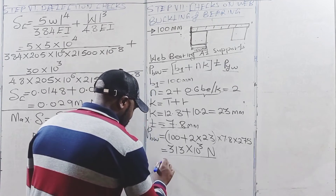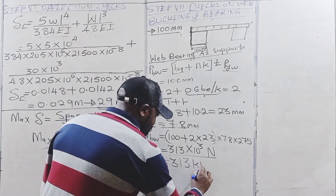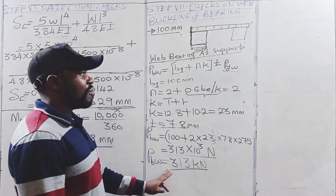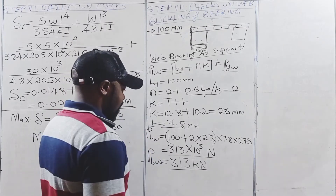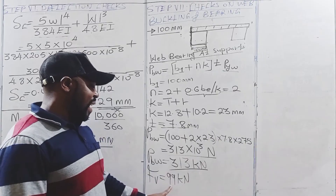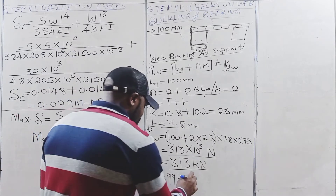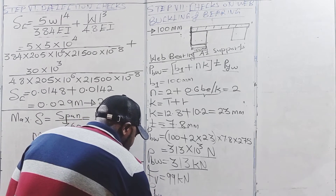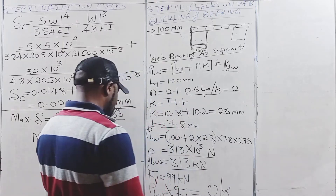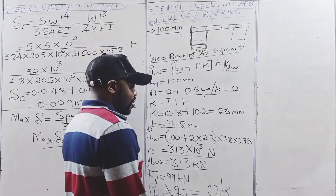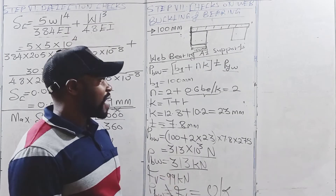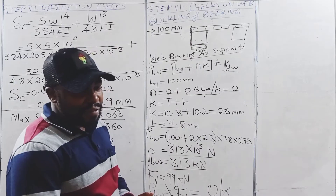Converting to kilonewtons, PBW is 319 kN. Comparing this with the shear force already calculated, which was 99 kN, we find that PBW is greater than 99 kN. Therefore the section is okay. PBW should always be greater than the shear force of the section for the beam section to be suitable.